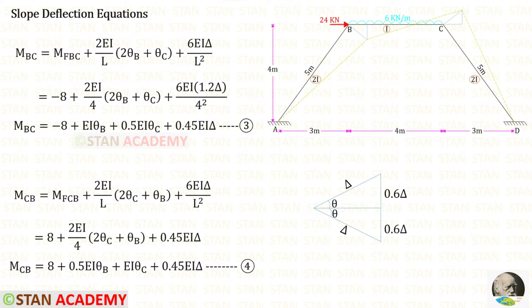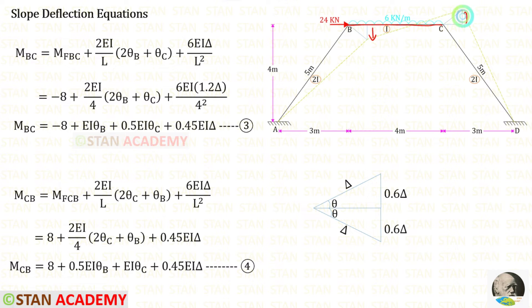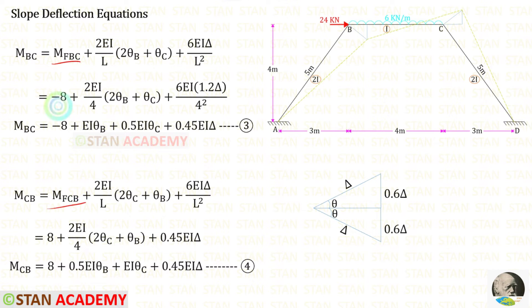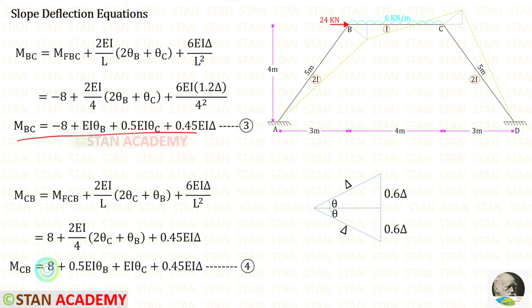Now let us make the slope deflection equations for member BC. Since this member is subjected to displacement, we add sway moments. For BC, the left end displaces downward and the right end upward, so these sway moments are positive. The total displacement is 1.2 delta. The fixed end moments are −8 and +8. Length of BC is 4. This gives us two equations for member BC.